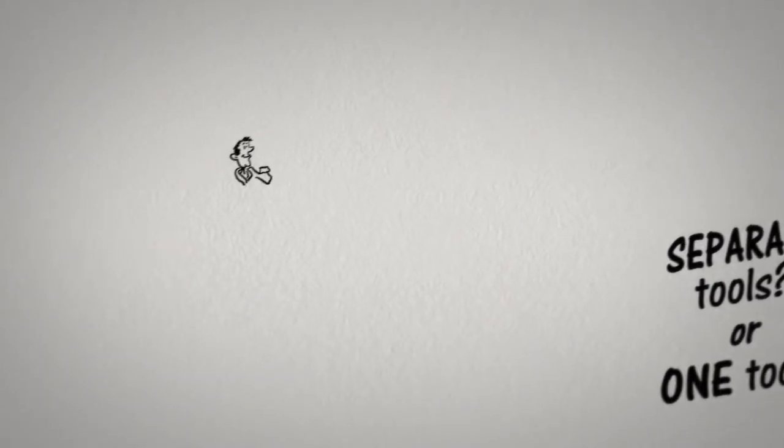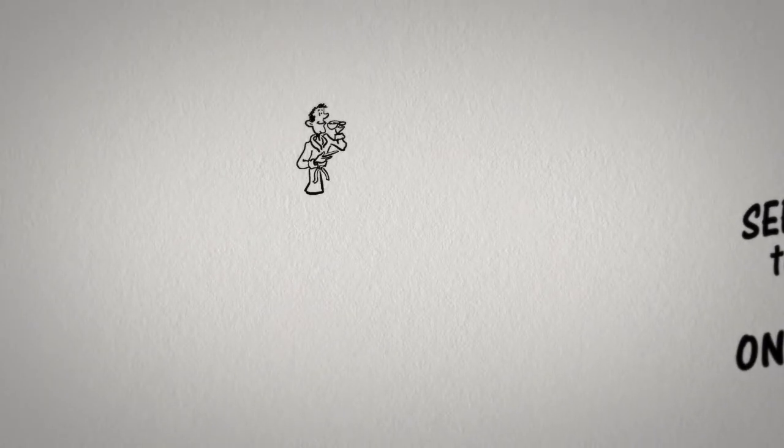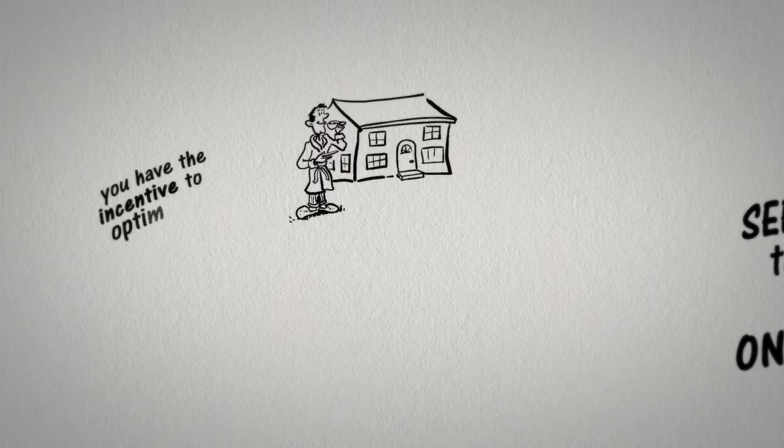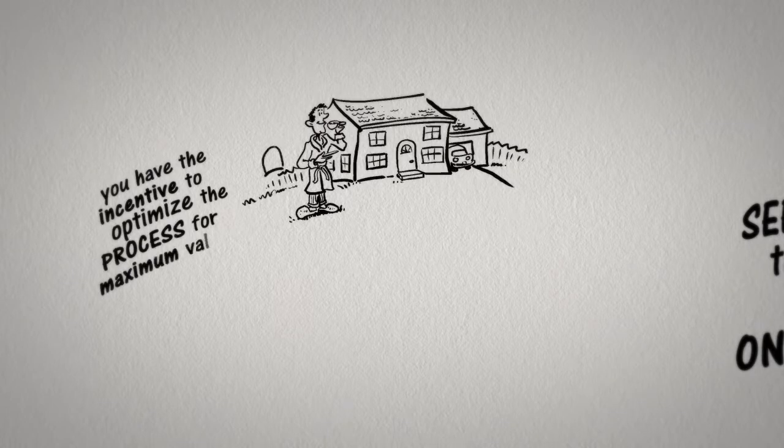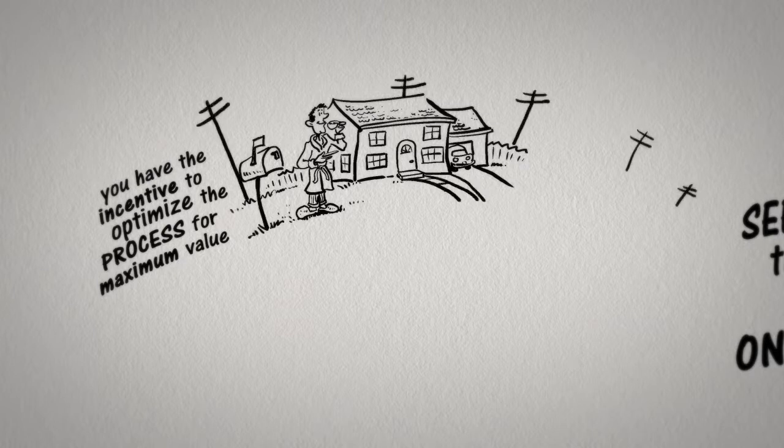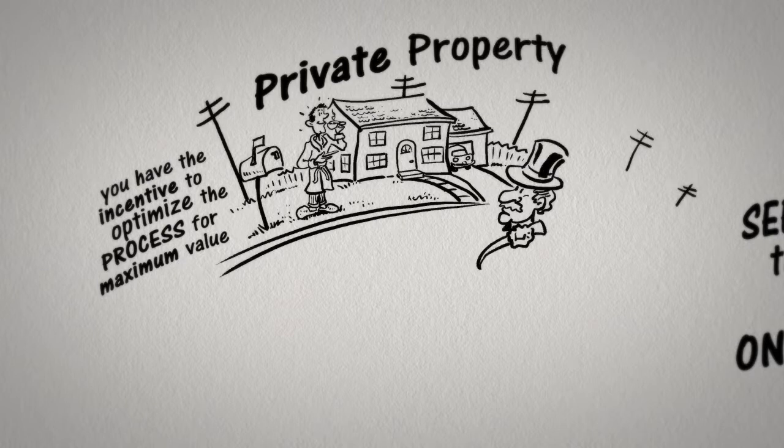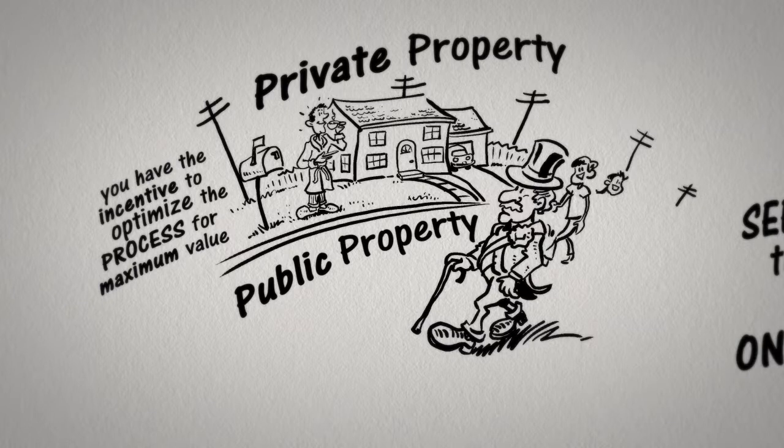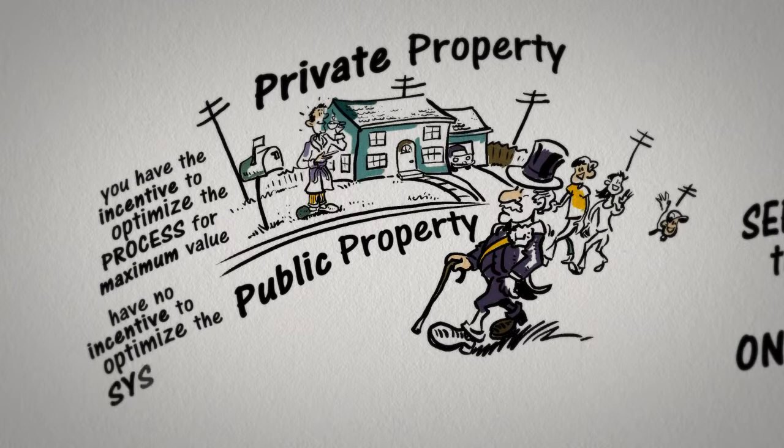Because you are the beneficiary of the cup of coffee and you incur the cost, including ownership of the kitchen, you have the incentive to optimize the process for maximum value. In economics, this is called private property. This is different than communal property or public property, where individuals do not own the property and thus have no incentive to optimize their systems.